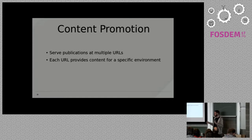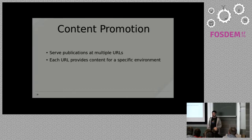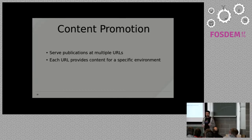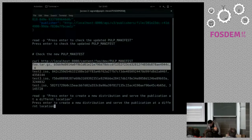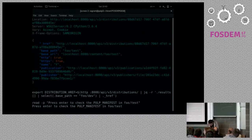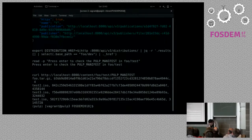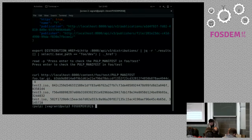Let's talk about content promotion. In Pulp 2, if you wanted the same set of content available at a different URL, you had to create a new repository, copy all the packages into it, and publish it again. In Pulp 3, all you have to do is create another distribution pointing at the same publication, and you've got it available at a different URL. We create another distribution — the first was at foo/dev, this one is at foo/test — and it shows the same content.